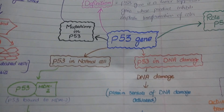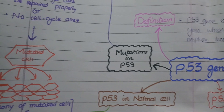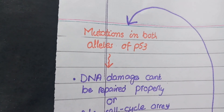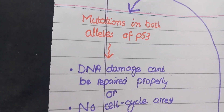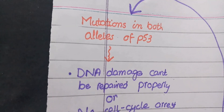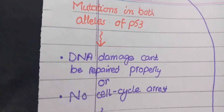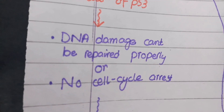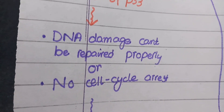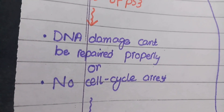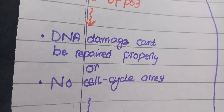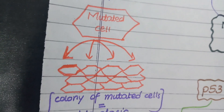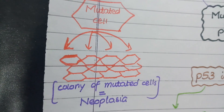Now let's see how mutations in p53 lead to cancer. Suppose there are mutations in both alleles encoding the p53 protein. If the DNA gets damaged for any reason, it can produce a big disaster because there is no p53 to induce DNA repair enzymes or cell cycle arrest. So mutated cells will remain permanent and divide continuously to form a colony of mutated cells, which will be called a tumor.